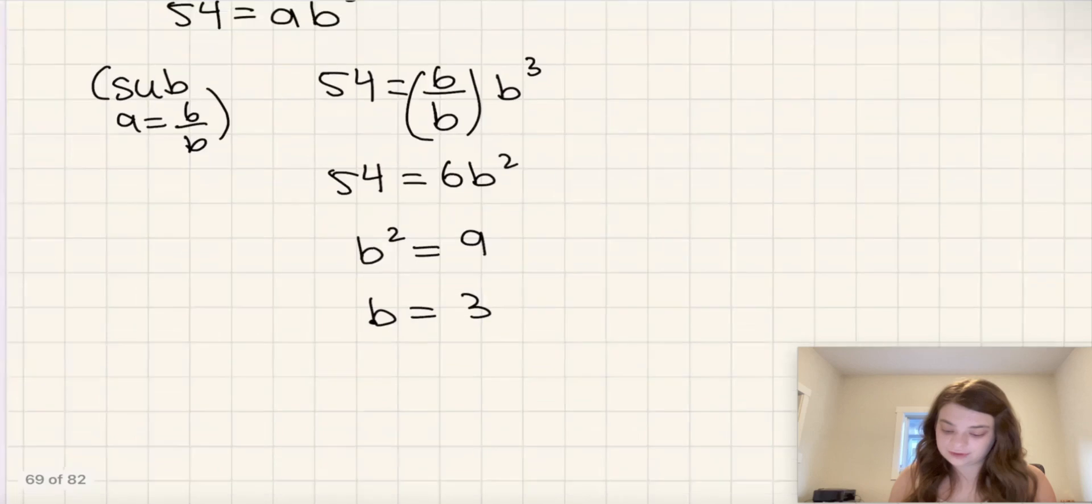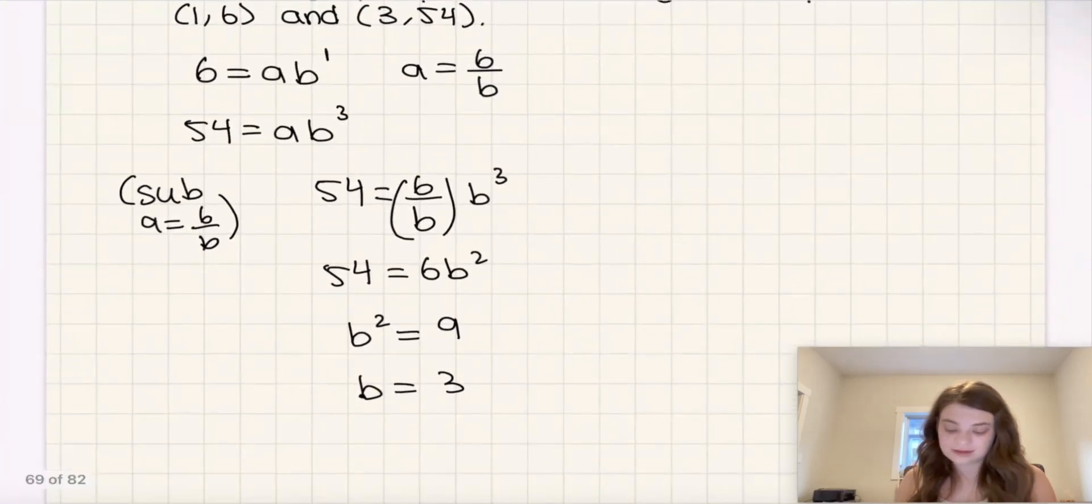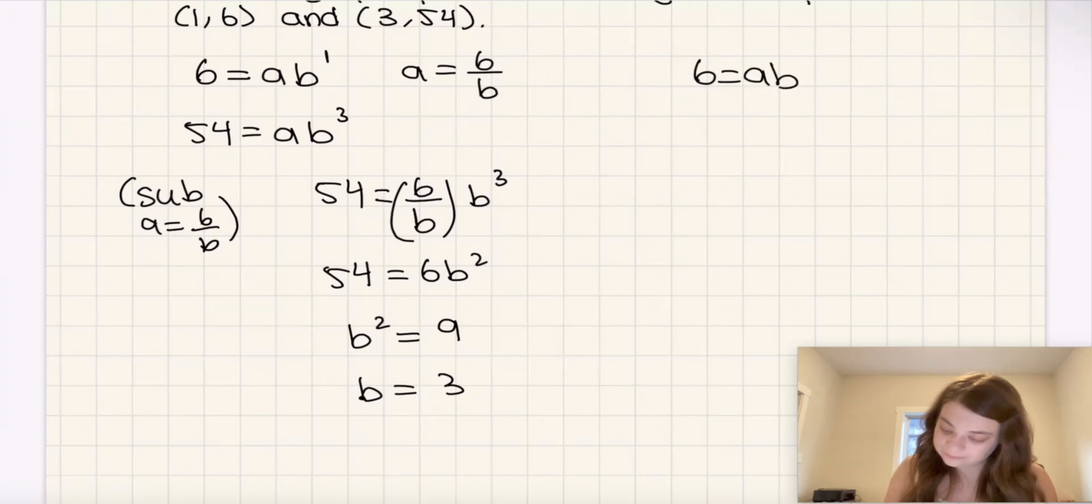Now, in order to find the a value, I need to plug in this b value back into one of my original equations. I'm going to choose the first one, the 6 equals ab, because that one seems easier. I'm going to sub b equals 3. That means 6 is equal to 3a, which means a is equal to 2.